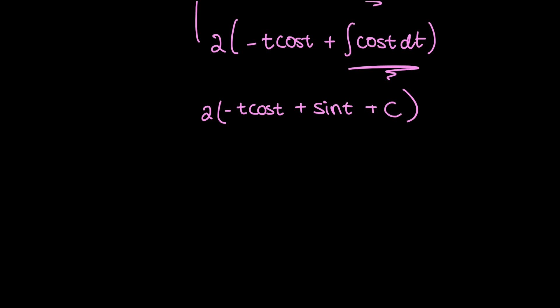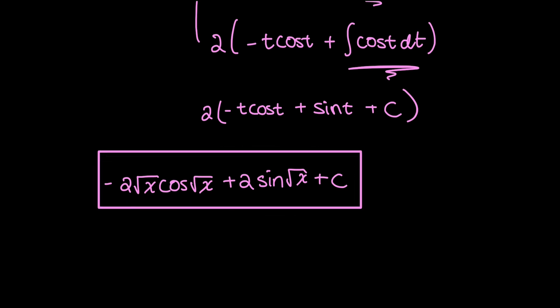Rewriting my whole integral in terms of x, and I'm also going to distribute the 2 to make things look nice. I have negative 2 times t, which is root x, times cosine root x, plus 2 sine root x plus c. And that's it.